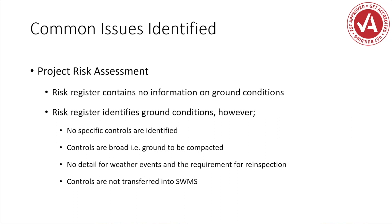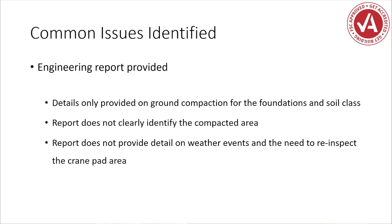Another issue: the project risk register contains sufficient information, but that information hasn't been transferred down into the SWIMS. The SWIMS itself is the site-specific component the workforce is working towards, so it should contain the relevant information — but sometimes that gets missed in the review process. We also find specific engineering reports, but sometimes the engineering report is predominantly on ground compaction for footings and foundations and the soil class, with no assessment of the compacted area where cranes are set up or traveling. We need to make sure the report clearly identifies the compacted areas, not just an overall general statement.